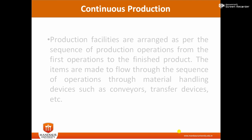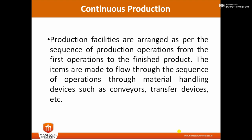In continuous production, facilities are arranged as per the sequence of product and operations, from the first operation to the finished product. This production system is used for a single variety of product. The example is a cement manufacturing industry, where raw material to finished product follows a sequential process, and a single variety of cement is manufactured throughout the whole year.